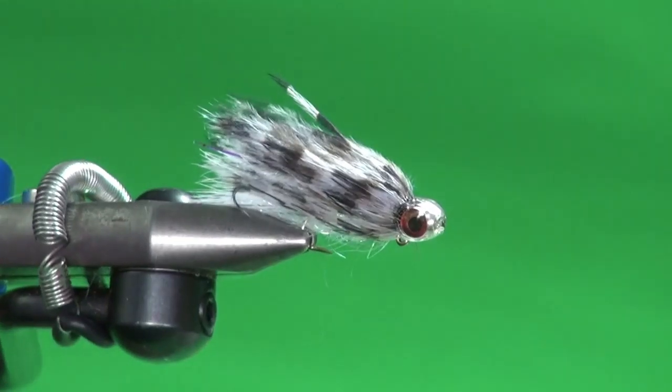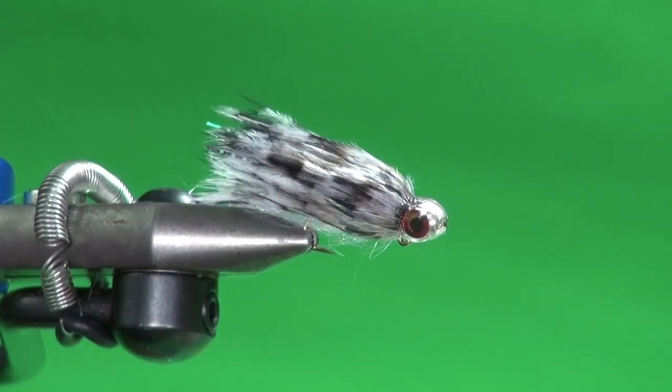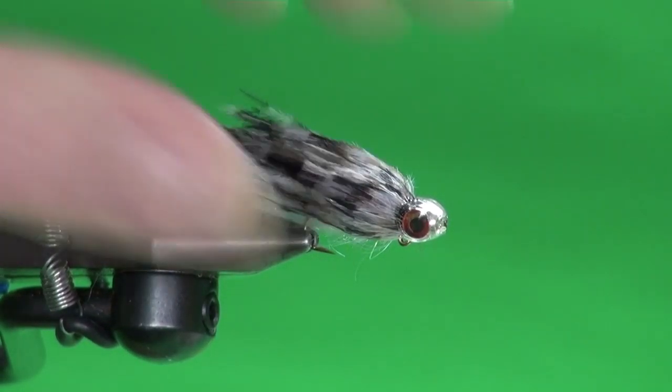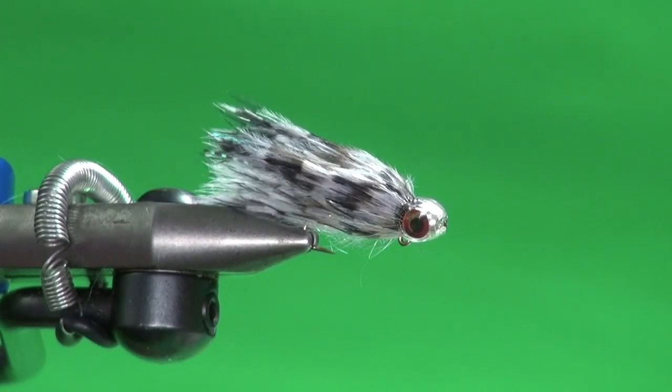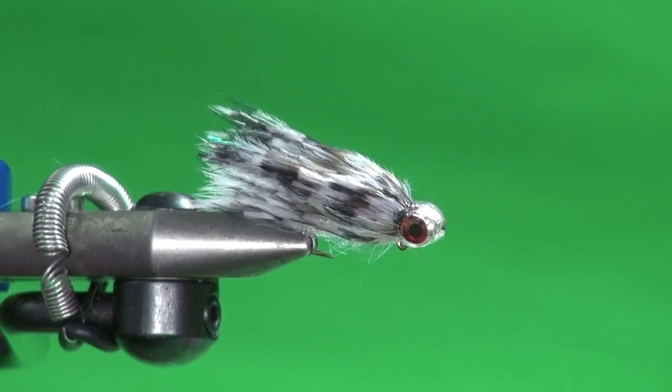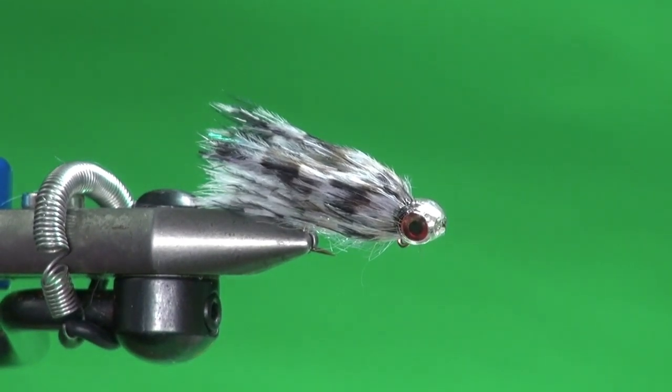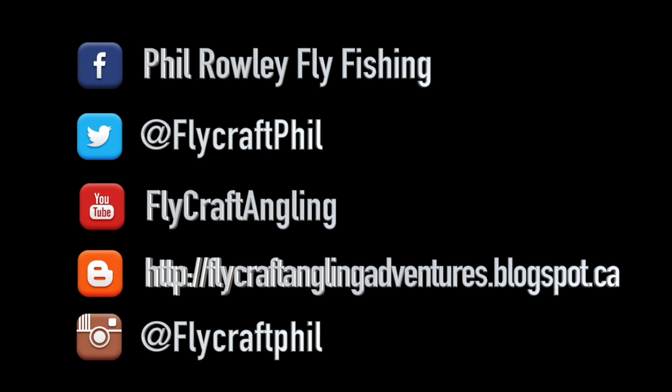Nice! So there we go, we've got a finished balanced minnow in white satin. And of course if you wanted to tie these in other color schemes you certainly can. The schlappen comes in other colors. You can take a marker and darken the head to match the overall body color that you're trying for. But there you go, balanced minnow white satin. Stash a few in the baitfish section of your fly box.